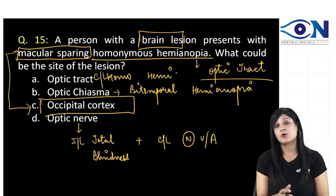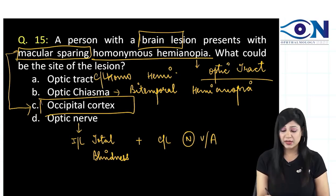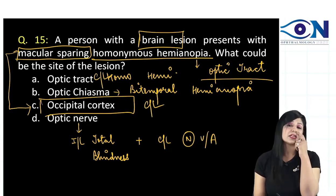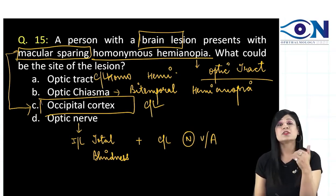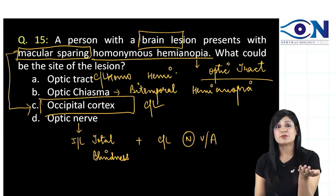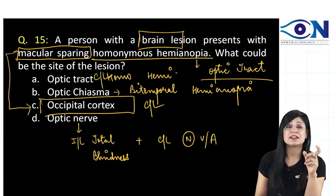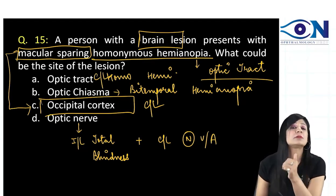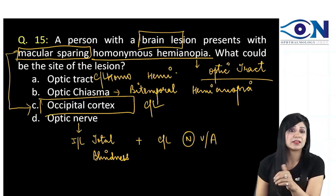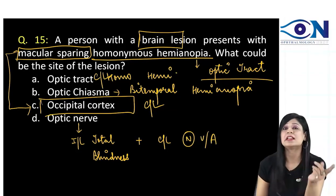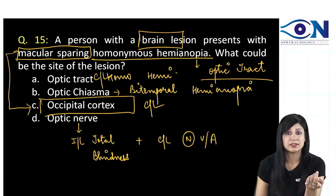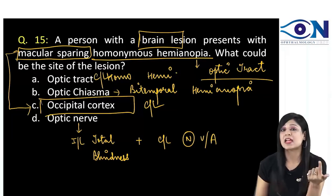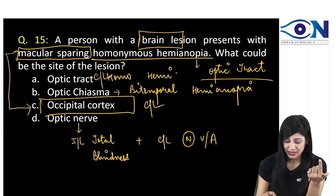Homonymous hemianopia with macular sparing is also contralateral. Sometimes they can also ask you the side. So if they say that there is right-sided macular sparing with homonymous hemianopia, then the answer will be the left occipital cortex. At one step ahead, they can ask you the side also.